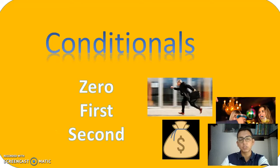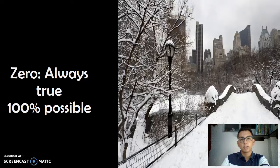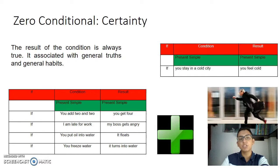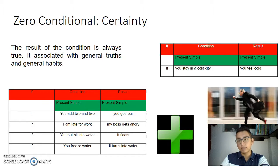Conditionals describe the result of something that might happen in the present or in the future, or might have happened but didn't in the past. So there are three kinds of conditional: zero, first, and second. Zero conditional means always true, 100% certainty. The result of the condition is always true. It's associated with general truths and general habits. It is necessary to use the present simple tense in the condition and the present simple tense in the result.